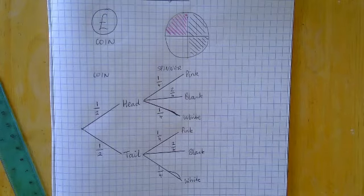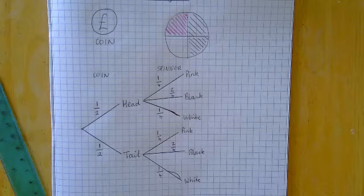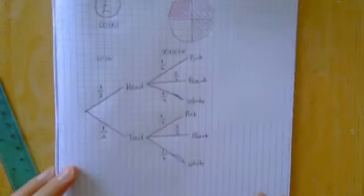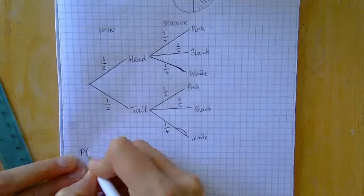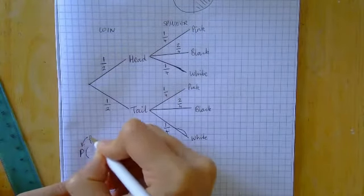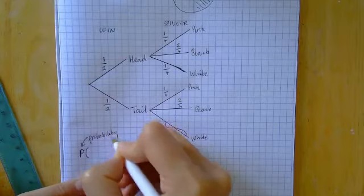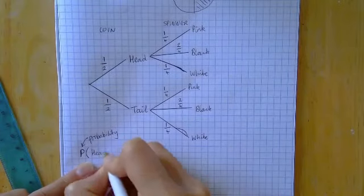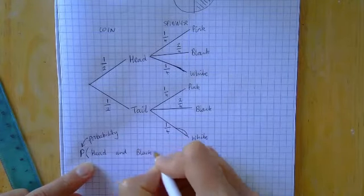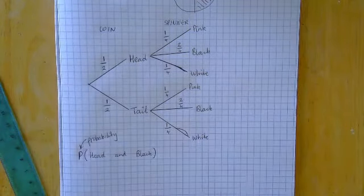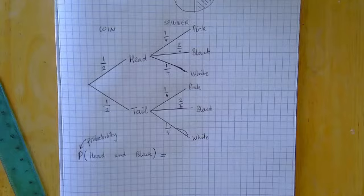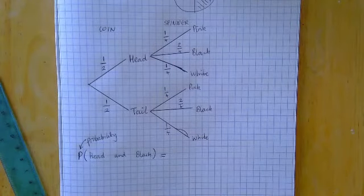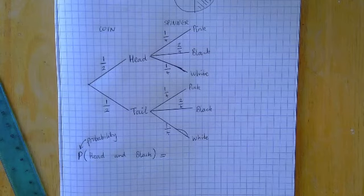They might ask us some questions about it — for example, what's the probability of getting a head and a pink, or getting a tail and a black? You might remember that we use a capital P and a curly bracket to represent probability. The rule to remember for tree diagrams is: when we walk along the branches, we multiply.